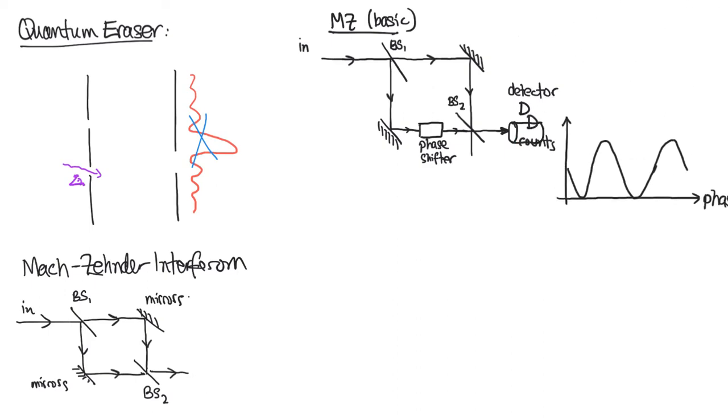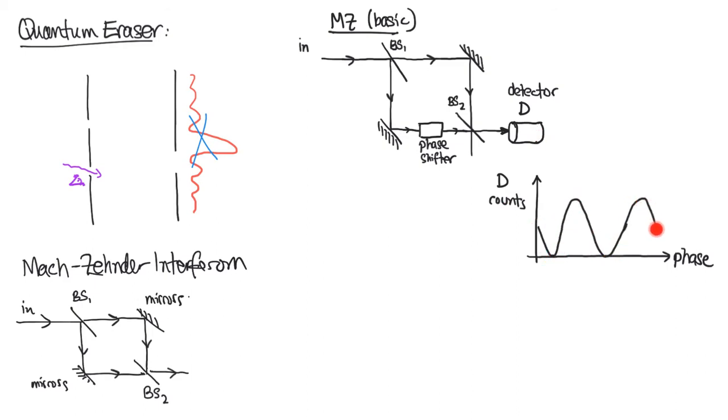As we've seen before that will look something like this. As we adjust the phase the number of counts that we'll see in detector D will undergo an oscillation pattern where for some phase shifts have zero counts in the detector and for some phase shifts have a maximum number of counts in the detector. The number of counts in the detector as a function of phase is this periodic function which indicates interference in the interferometer. So this is a system that exhibits interference because we have no which way path so we get interference.